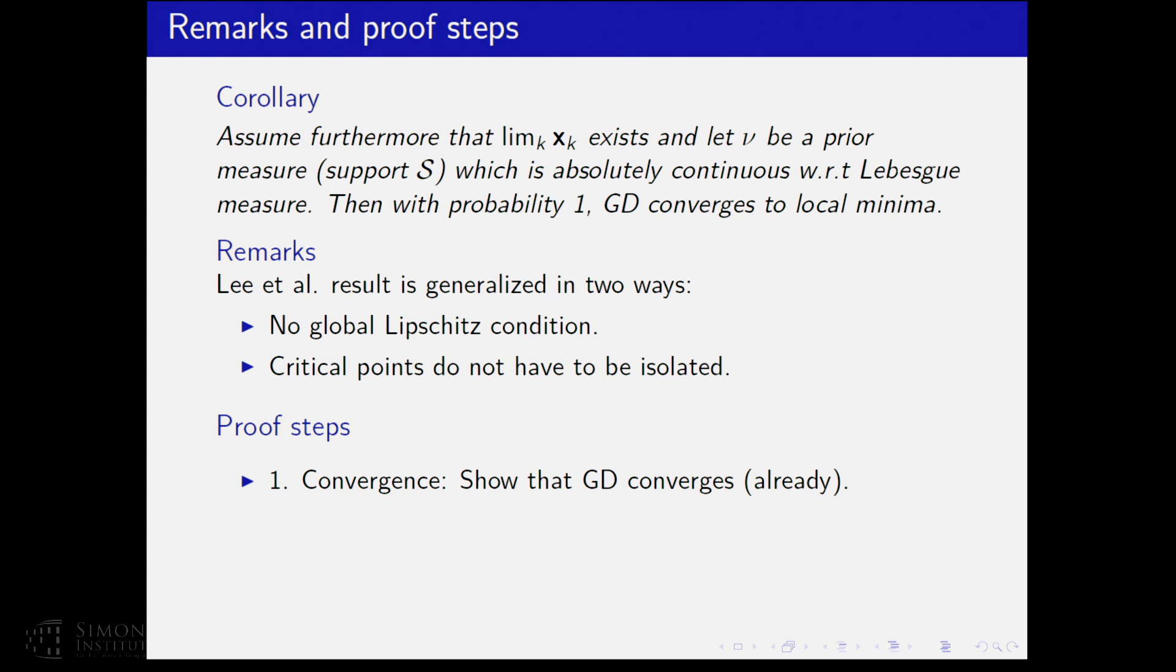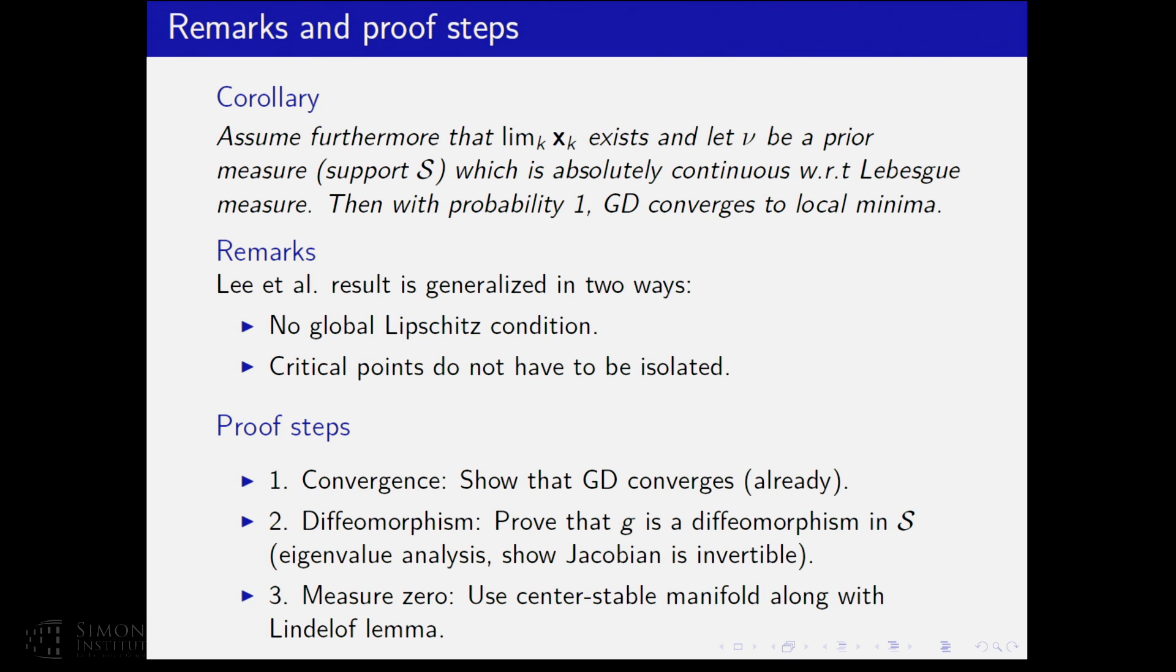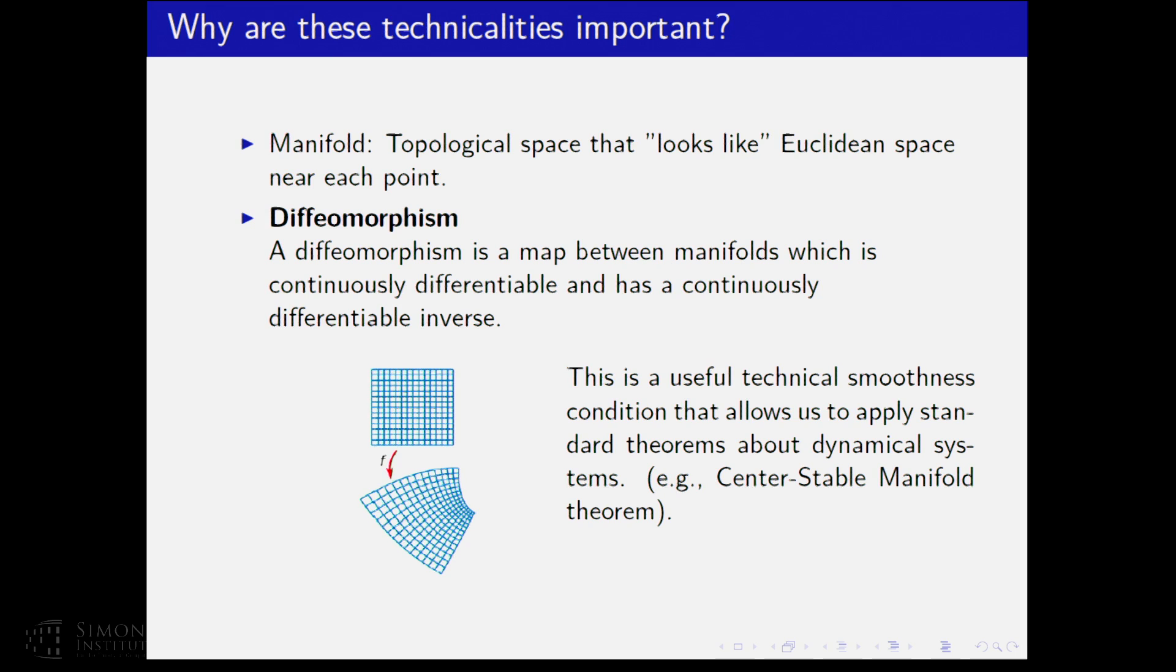So, the proof steps, essentially, the steps of the proof are three. First of all, you have to show convergence to fixed points, the set-wise convergence. This has been done already. This is a folklore thing. The second thing you have to prove is that the update rule of your dynamics is a diffeomorphism, and this can be shown via eigenvalue analysis. And the third step is to use techniques from dynamical systems. Basically, something that's called center-stable manifold theorem, along with Lindelöf Lemma, to prove the measure zero, essentially, argument. I will skip this slide just to say that the definition of a diffeomorphism, and this is needed to use the center-stable manifold theorem.